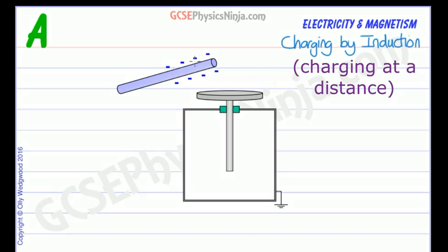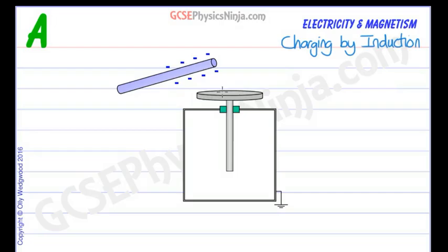As you bring this negatively charged rod close to this metal cap and stem, it will repel any negative charges that are in this metal. And of course, there are lots of electrons in a metal.